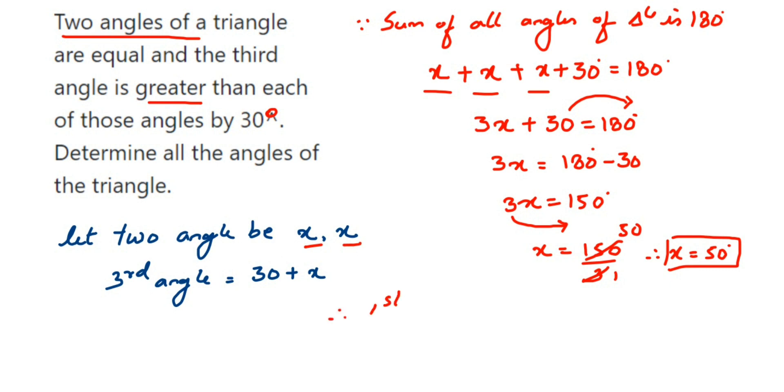Therefore, the first and second angles equal 50. The third angle was 30 degrees greater than the first two angles, that is x plus 30. The x value we got here is 50, so 50 plus 30 will be 80 degrees.